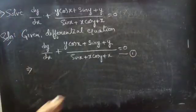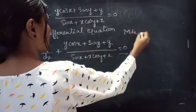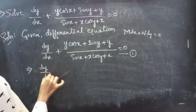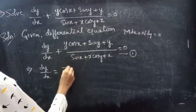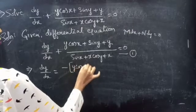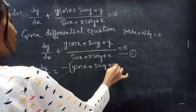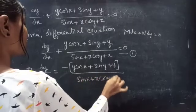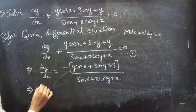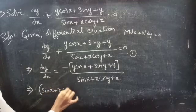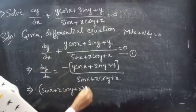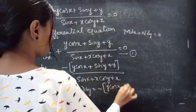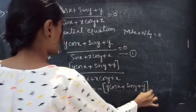We can reduce the given differential equation into M dx + N dy = 0 form. For that purpose, we will take the second term to the RHS. We get: (sin(x) + x·cos(y) + x) dy = −(y·cos(x) + sin(y) + y) dx.